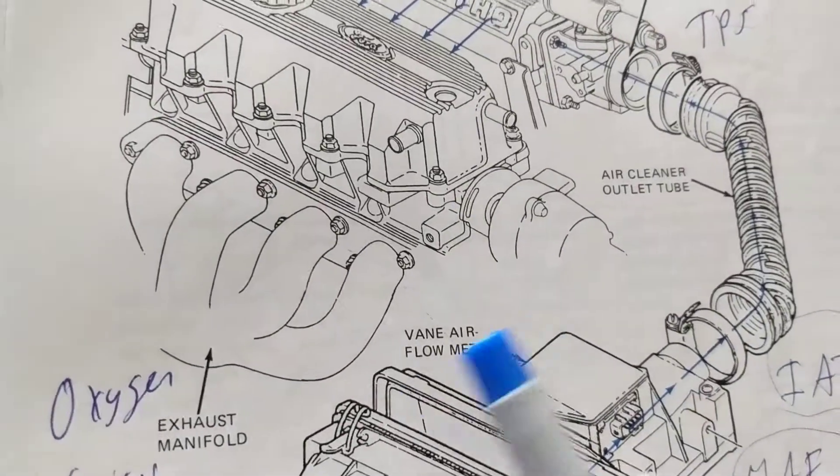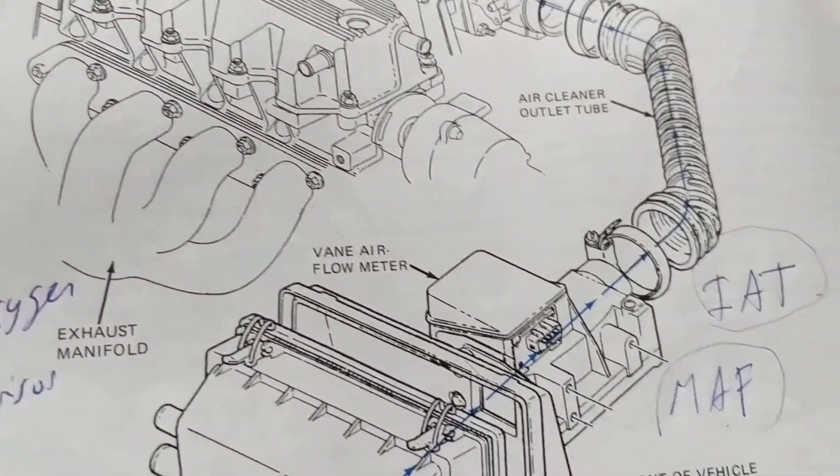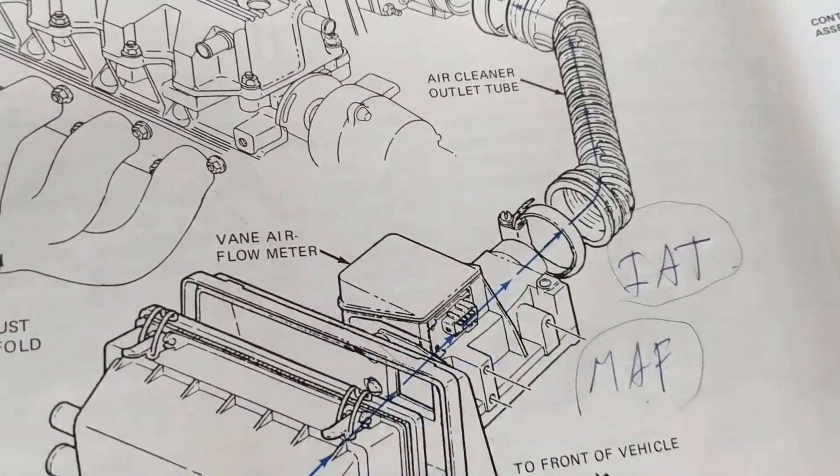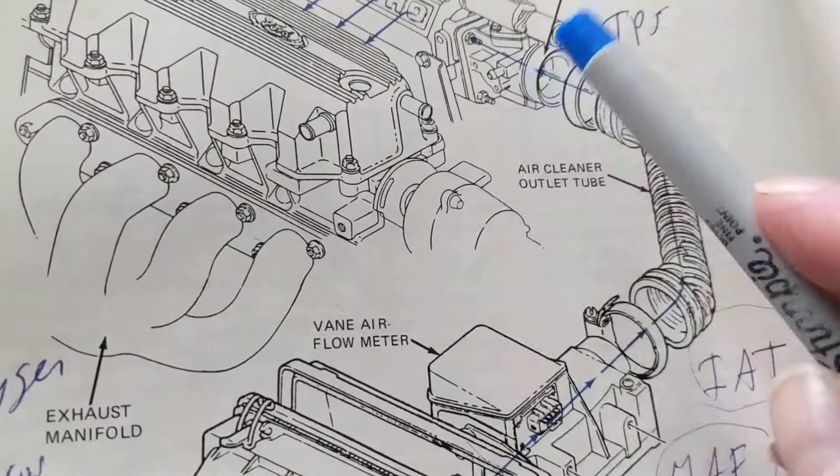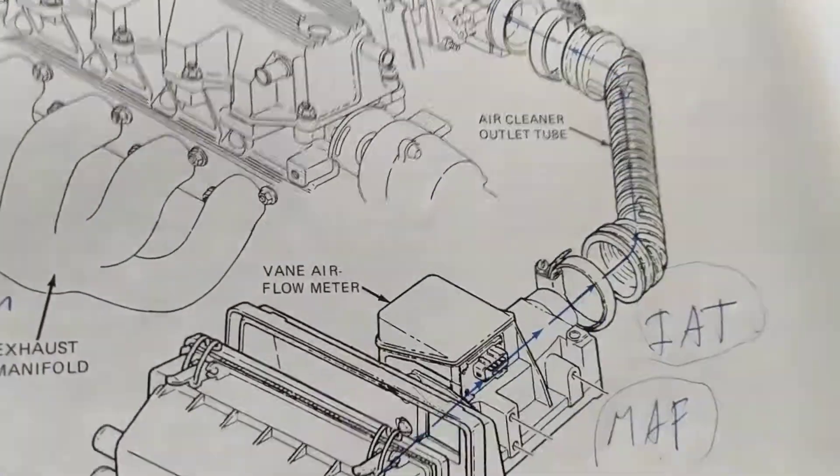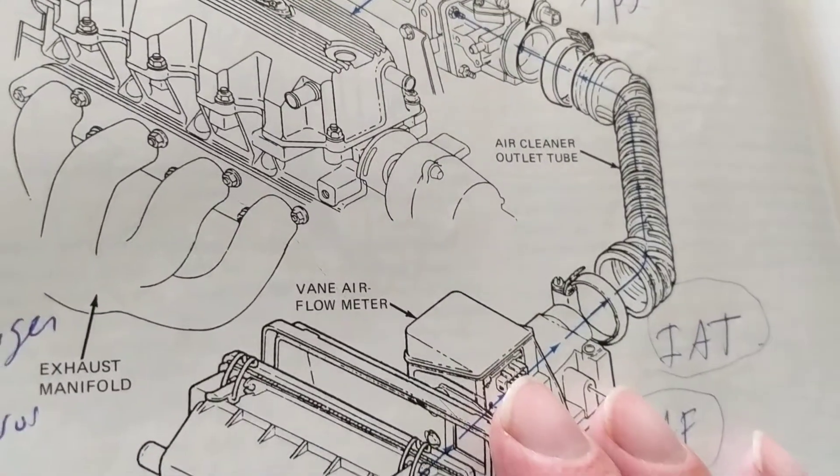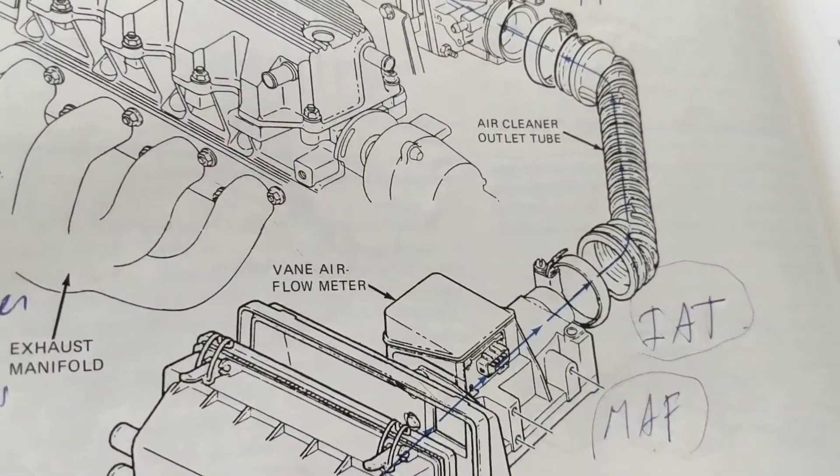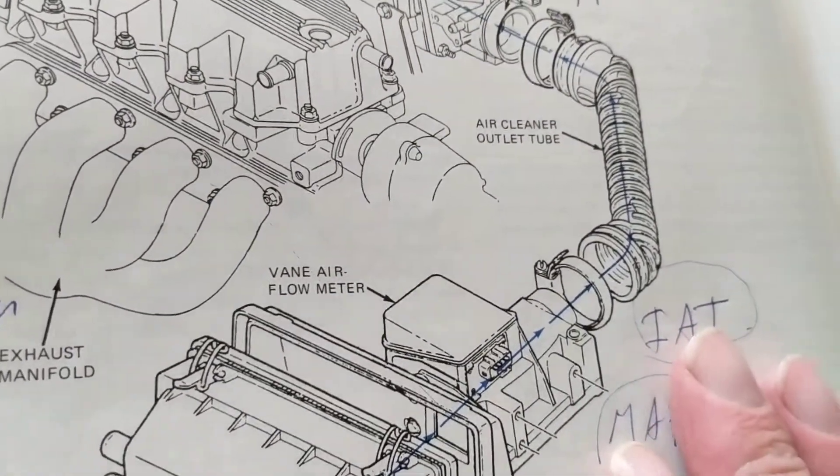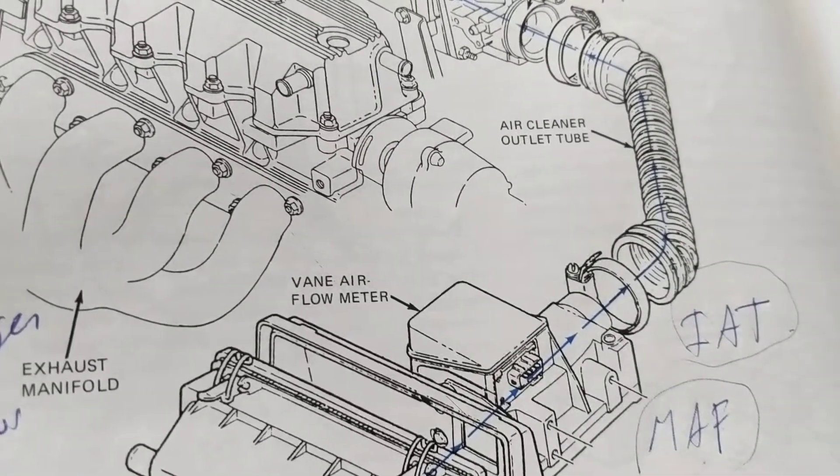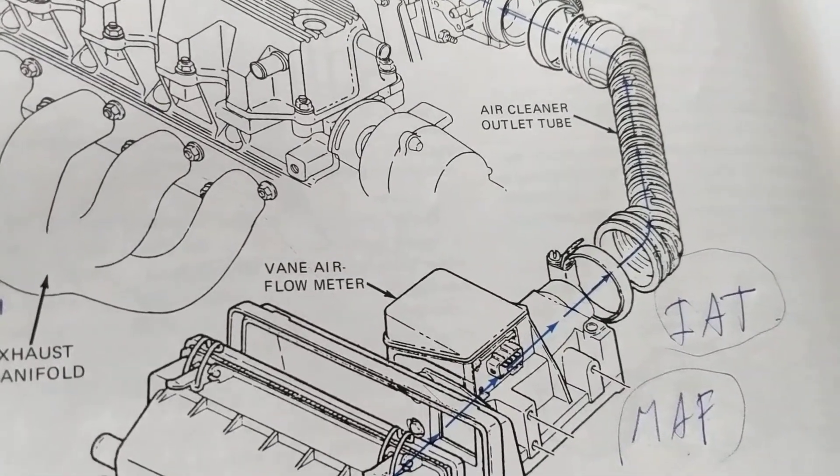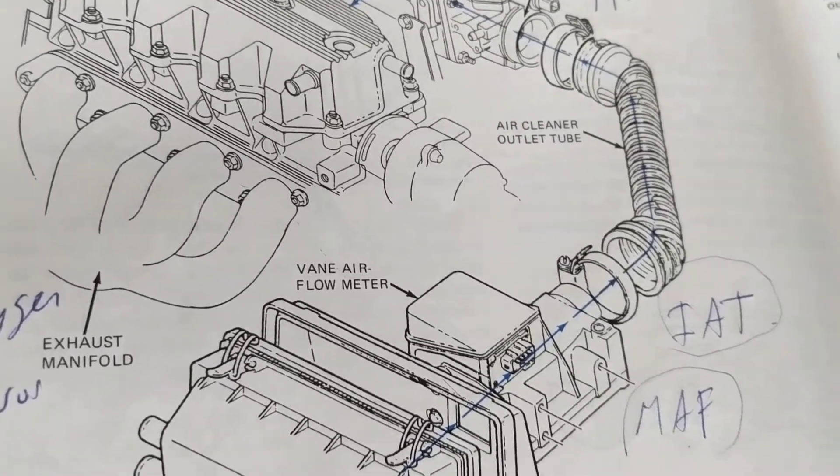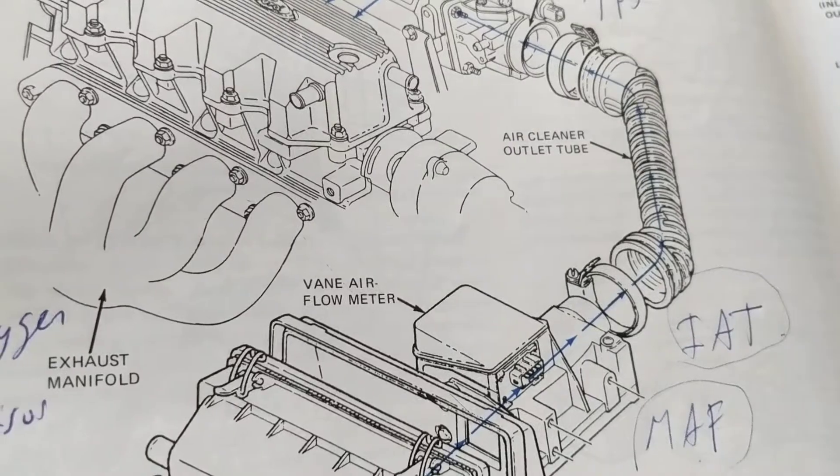Mass airflow sensor doesn't matter what make or model. How much air is going through, how much are we opening up the throttle, the temperature there. The coolant temperature sensor, what's the temperature of the coolant in the engine? Is the engine hot? Is the engine cold? Are we on sea level? Are we above sea level, in Colorado on the mountains where sea level is different? Then we have to adjust the proper air, the proper fuel, otherwise the engine will choke itself.